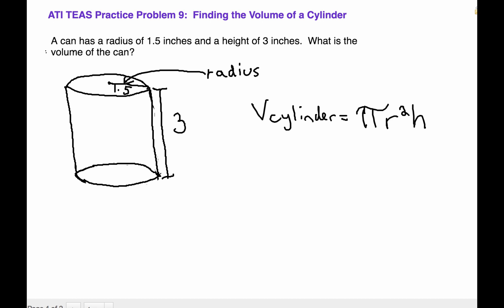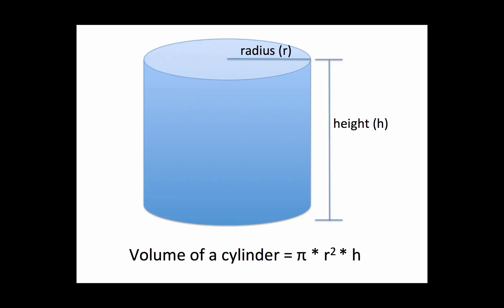Before we work on this problem, let's talk about what a cylinder actually is. A cylinder is a three-dimensional shape in geometry. It is round and has a top and bottom in the shape of a circle. The top and bottom are flat and always the same size.